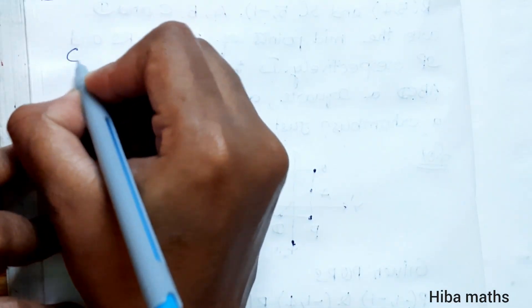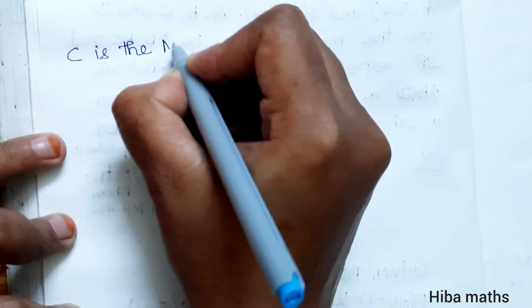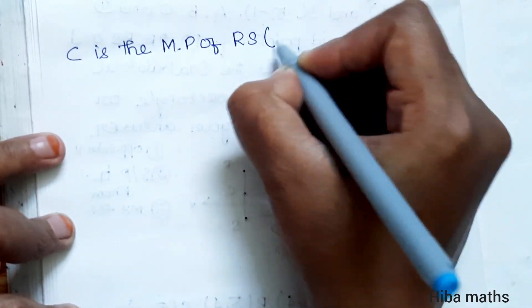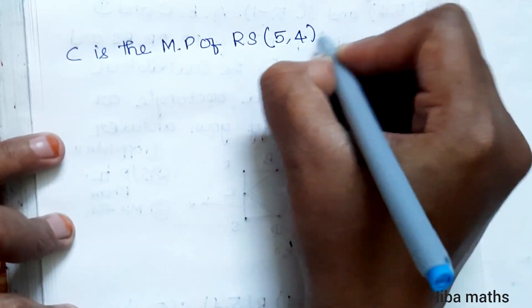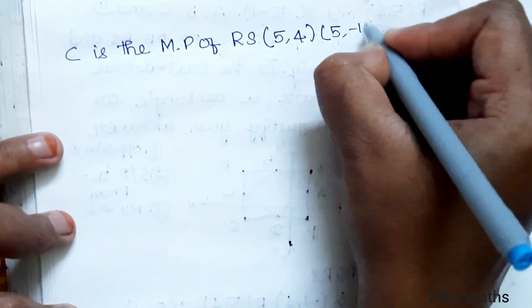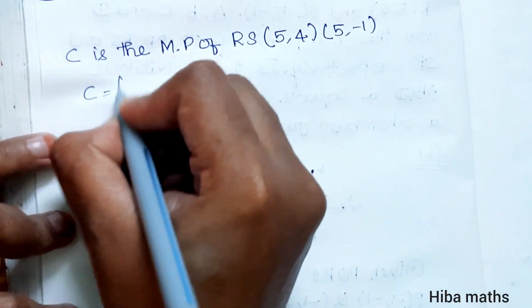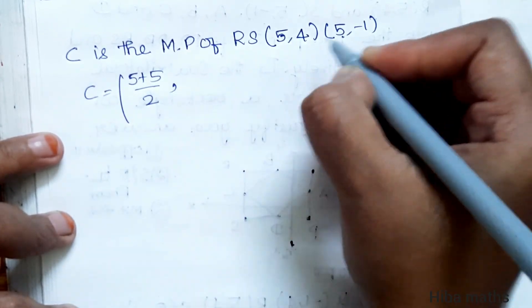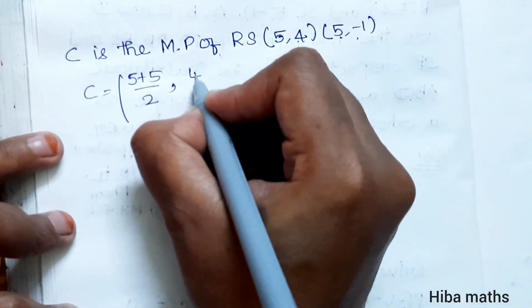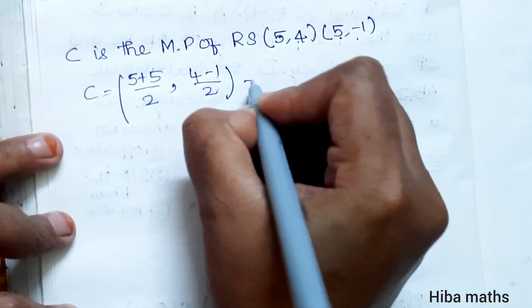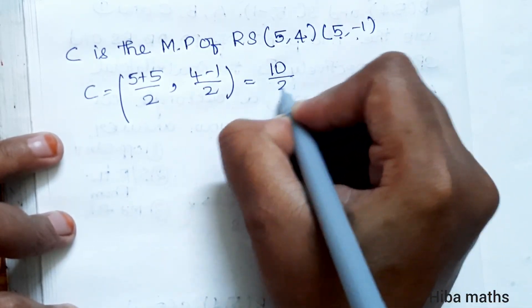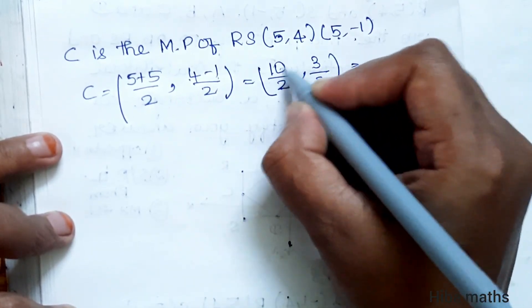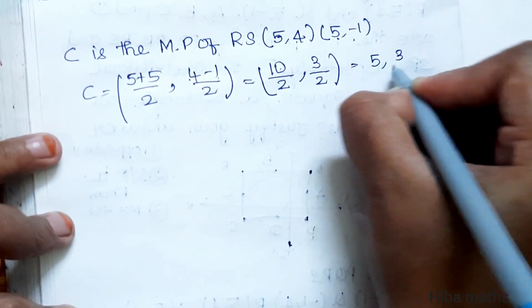C is the midpoint of RS. R is (5, 4) and S is (5, -1). C = (5 + 5)/2, (4 + (-1))/2 = 10/2, 3/2 = 5, 3/2. So C = (5, 3/2).